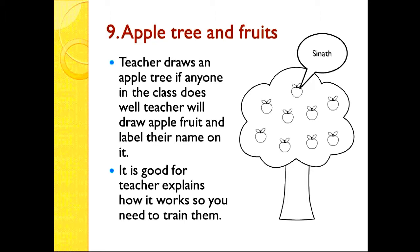Number nine: apple tree and fruit. Draw a tree and fruits on it, and write each student's name on a fruit. Label the names clearly. This is good for the teacher to explain how it works. You need to train students first — before you give discipline, train them. If you don't, they will question why you are asking them to do something or why you are disciplining them.